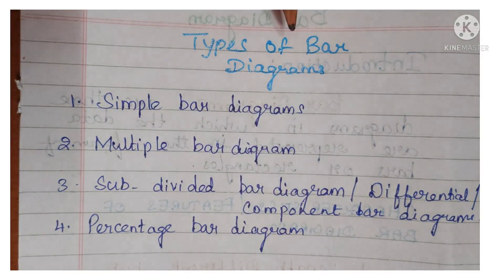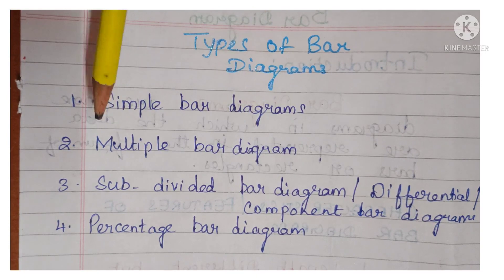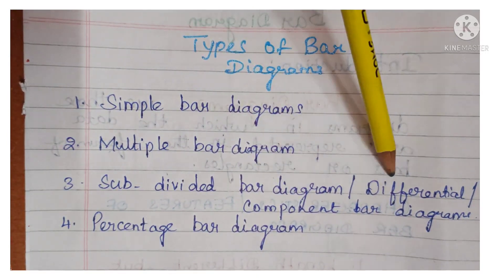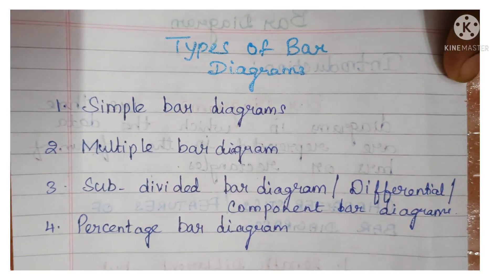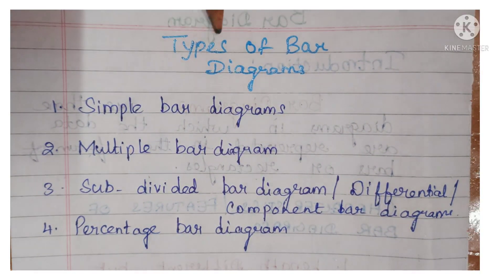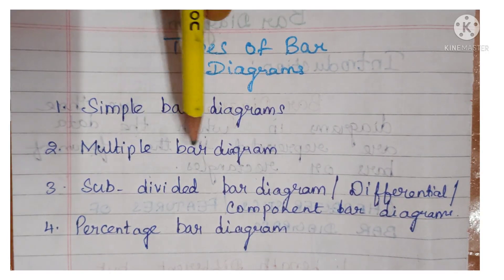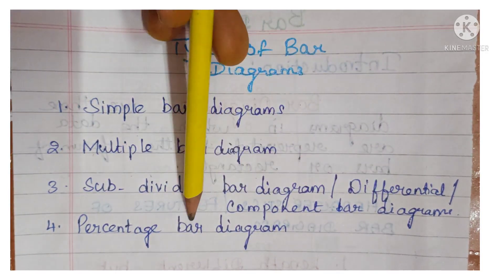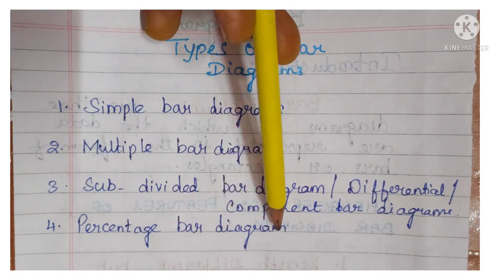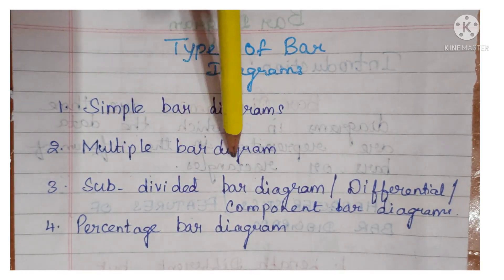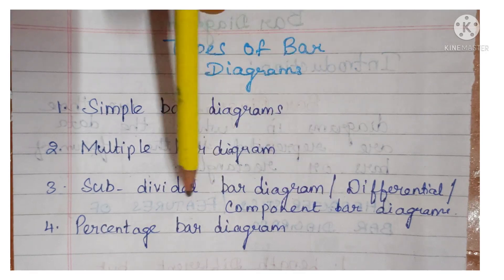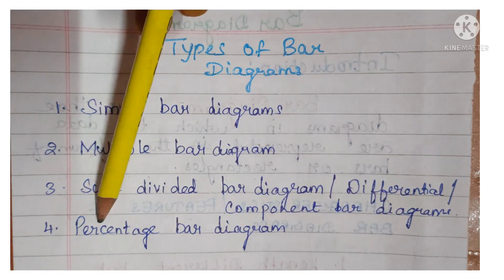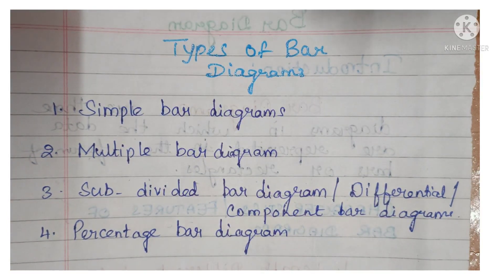Next, we will see the types of bar diagram. You have simple bar diagram, multiple bar diagram, subdivided bar diagram — which is otherwise called differential bar diagram or component bar diagram — and finally percentage bar diagram. Let's see them one by one.